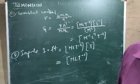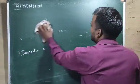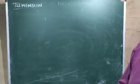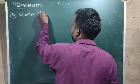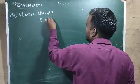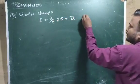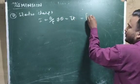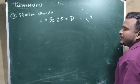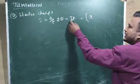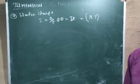Now we will see the dimensional formula for electric charge. You know that I = Q / T, so Q = I × T. For current, the dimensional formula is A (ampere), as it is a fundamental unit. For time it is T, so the dimensional formula for electric charge will be A T.